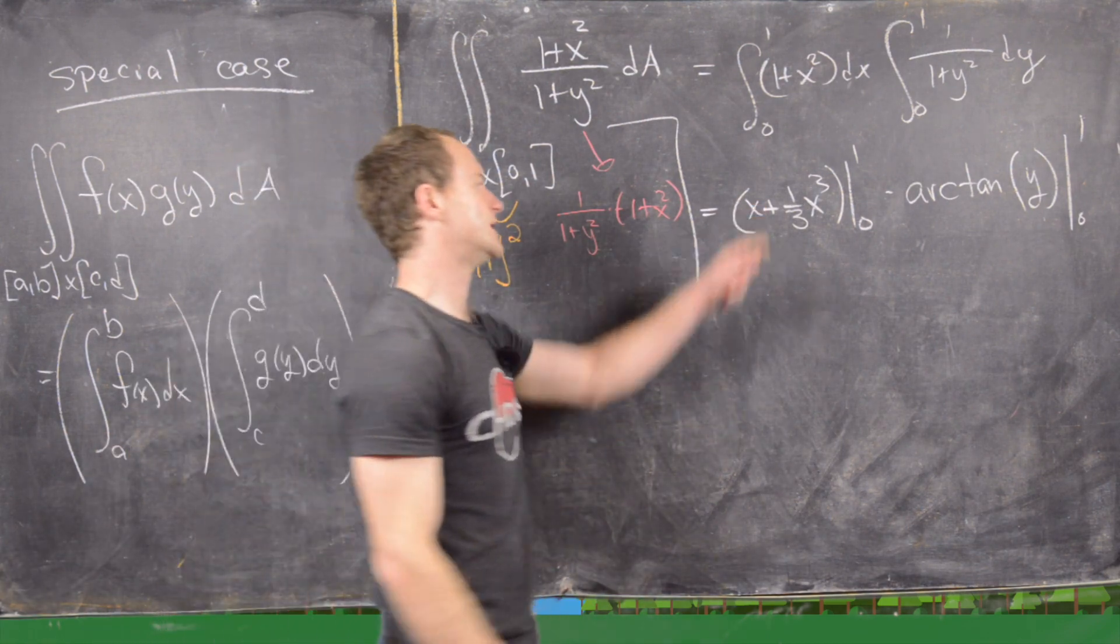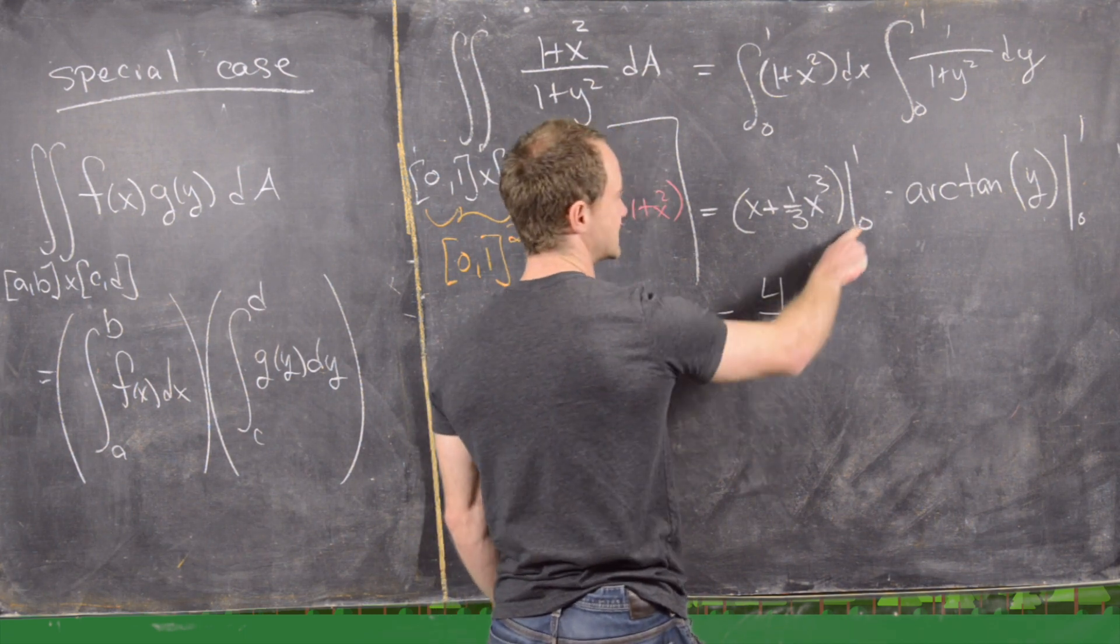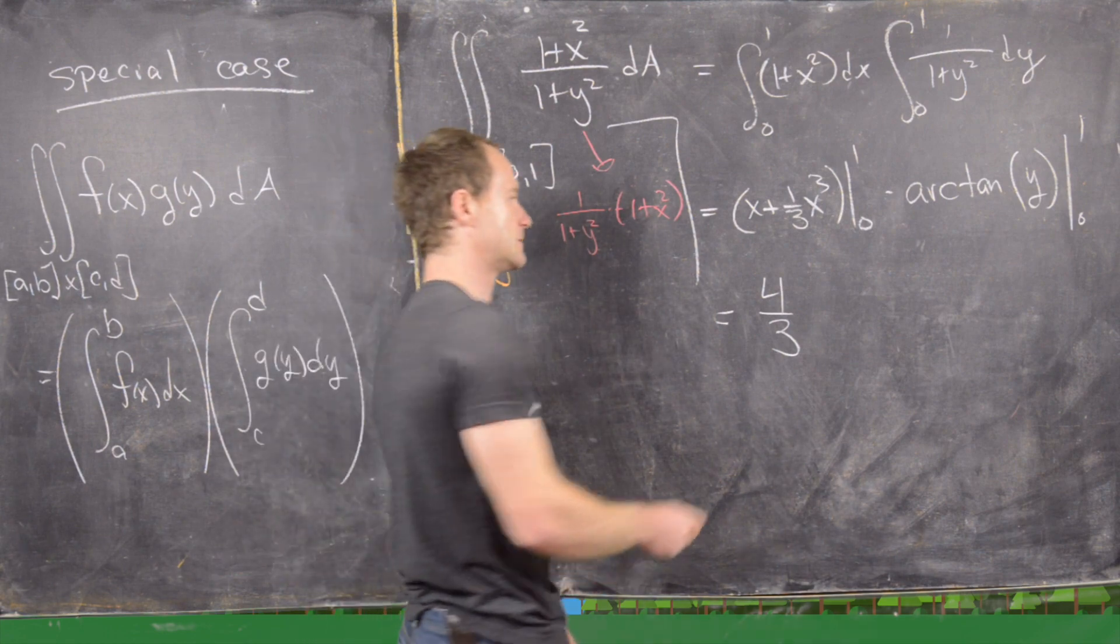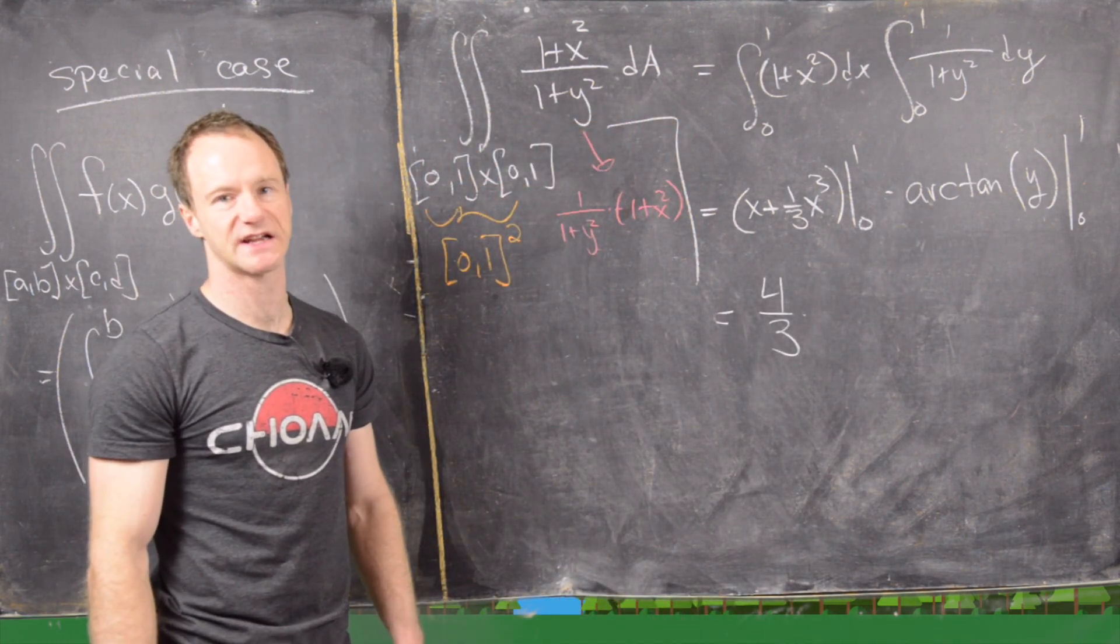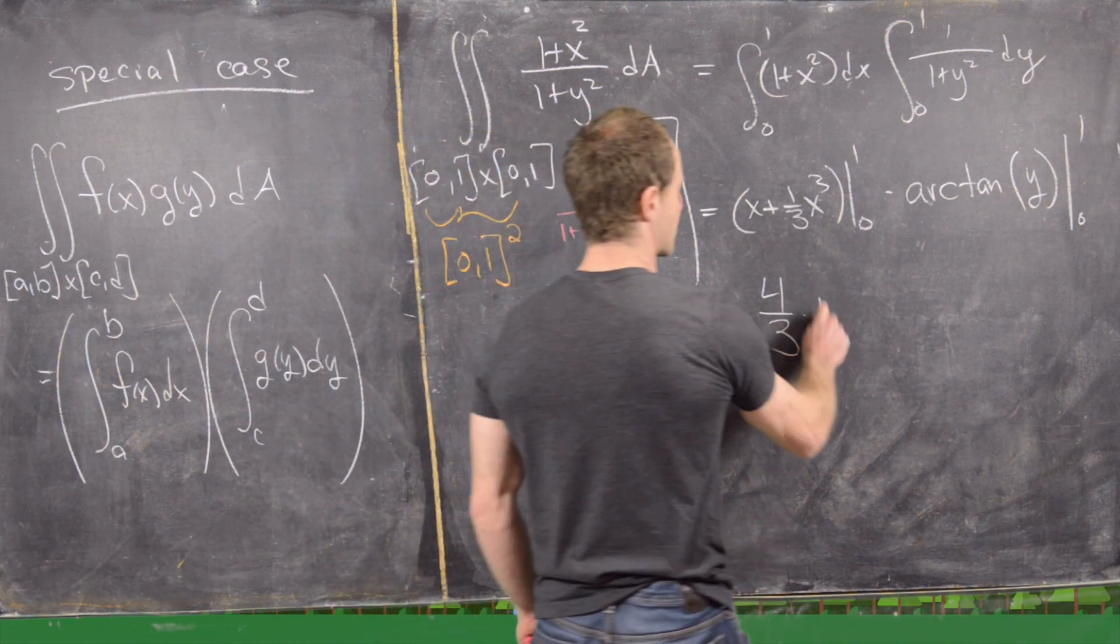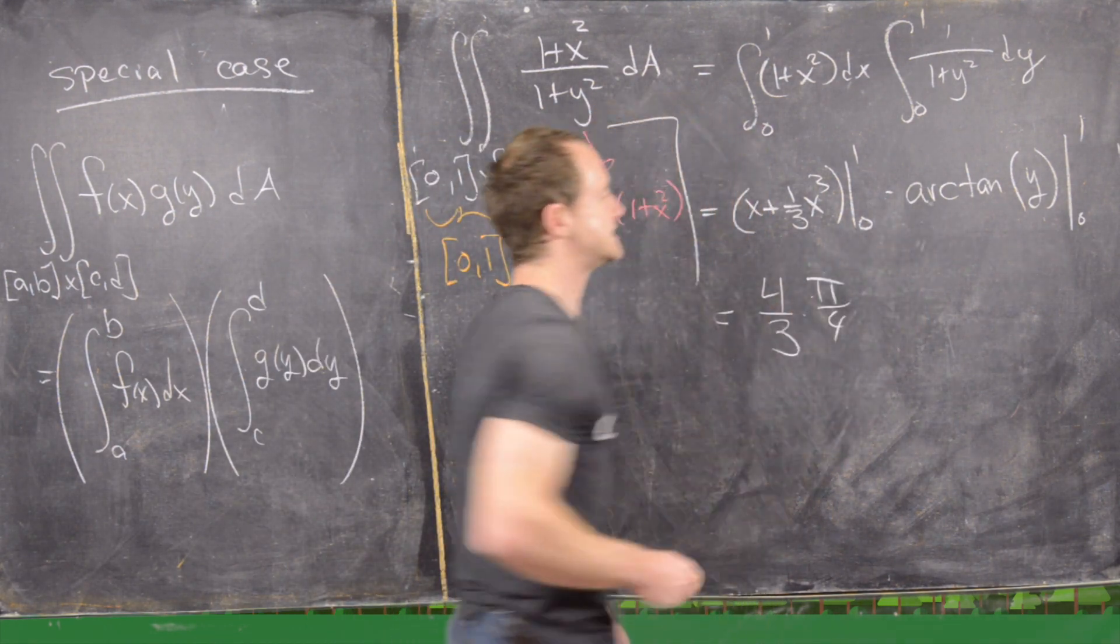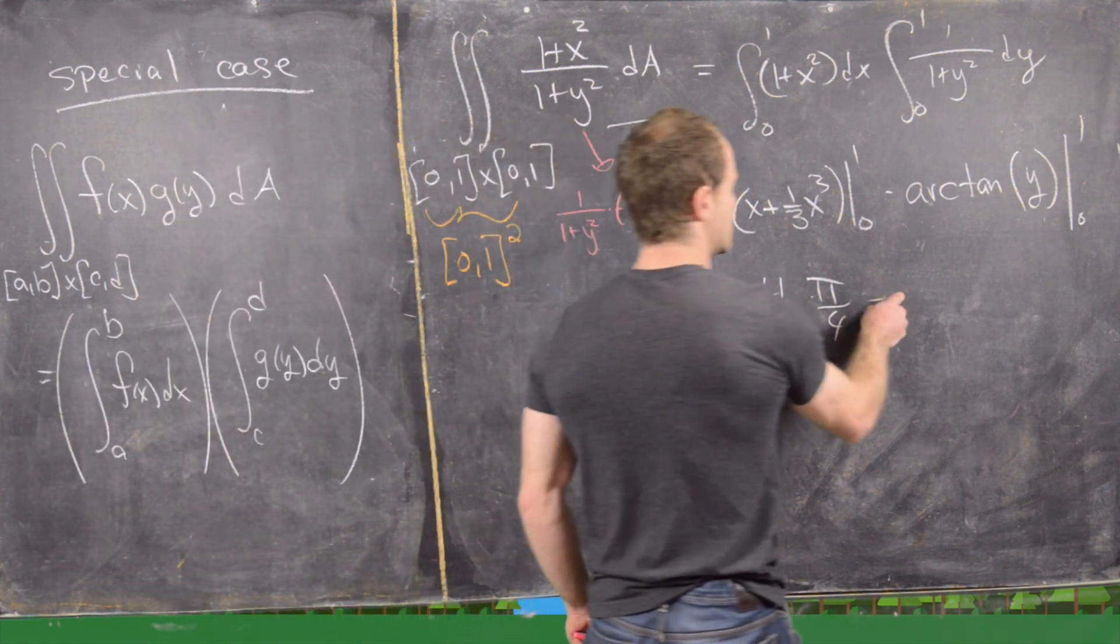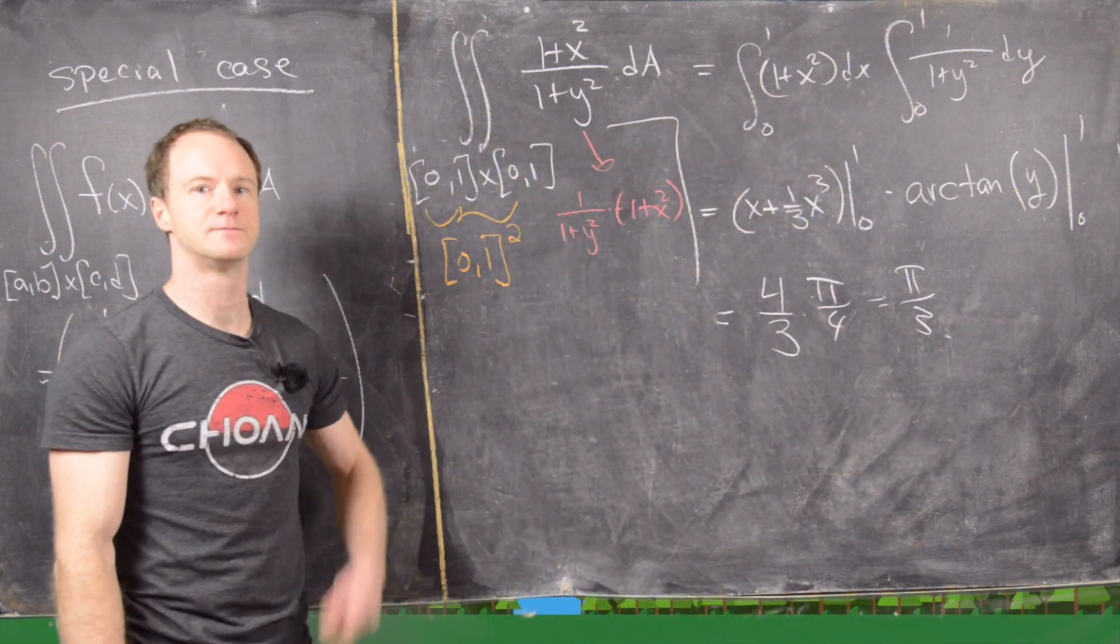Okay, so now notice plugging 1 into this we get 1 + 1/3, which is 4/3. Plugging 0 in we'll get 0, so that's minus 0. Now plugging 1 into that, we get the inverse tangent of 1, which is π/4. Plugging 0 in there, we get the inverse tangent of 0, which is 0. So in the end we just get π/3. Okay good, so we're done.